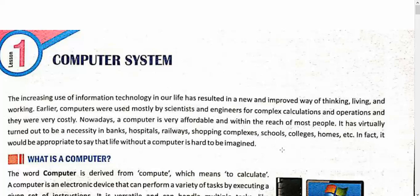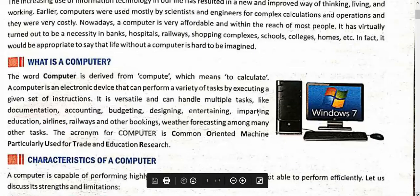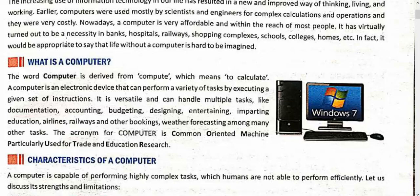In this chapter, let's start with what is a computer. The word computer is derived from 'compute', and its meaning is 'to calculate'. So this is an electronic device which can perform a variety of tasks by executing a given set of instructions. This is a very precise definition of a computer — it is an electronic device that performs a variety of tasks by executing a given set of instructions.